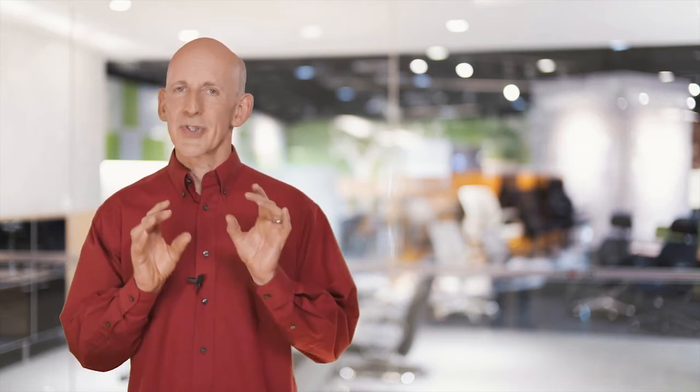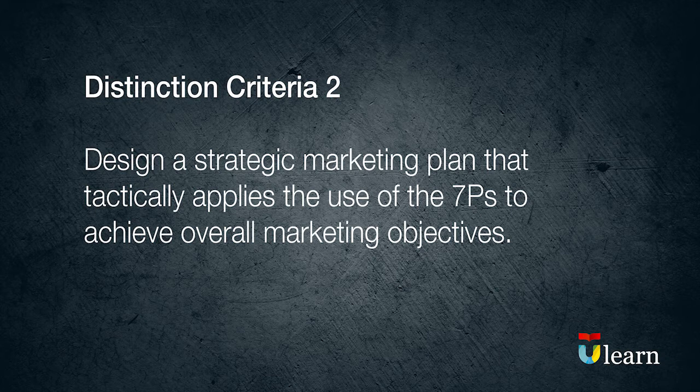The second distinction criteria for unit 2 requires you to design a strategic marketing plan that tactically applies the use of the 7 P's to achieve overall marketing objectives.